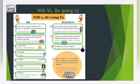So we use will to express something coming in the future, or a prediction — meaning a possibility — or a future fact, or a promise, or an offer — meaning a suggestion — or a threat, or a refusal. Now, be going to: we use it to express future plans decided before the moment of speaking.